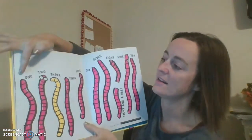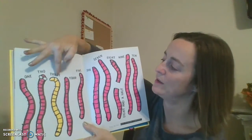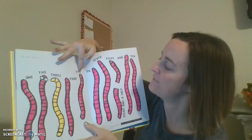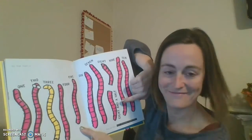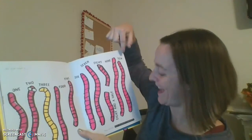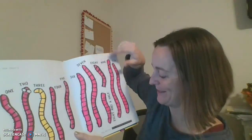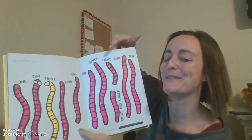One, two, three, four, five, six, seven, eight, eight and a half, nine, ten. Ten worms. All friends forever.